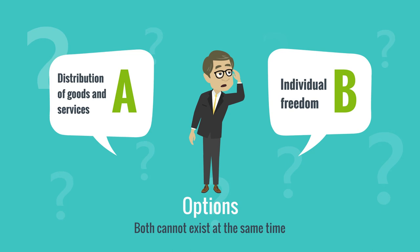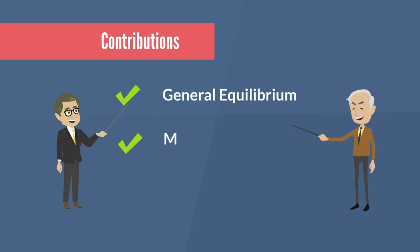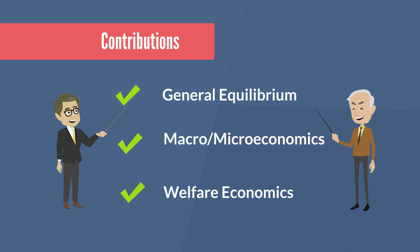Both Arrow and Hicks have made lasting and wide-ranging contributions to economic theory, from general equilibrium to macroeconomics and welfare economics. In other words, they helped us to understand how the economic relations work in a society, and how some societies had reached a better welfare status. Their works have found policy applications in international trade, project evaluation, taxation, environmental policy, and even in areas of electoral reform. So, now you can have a better perspective of its importance.